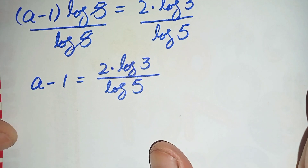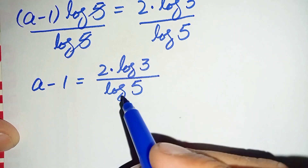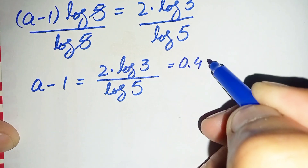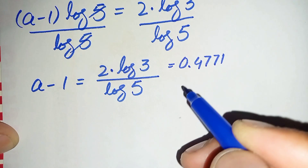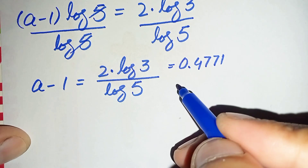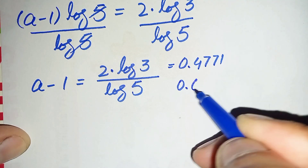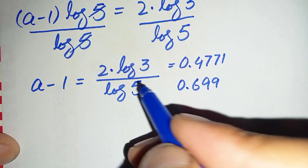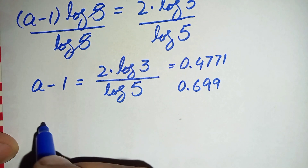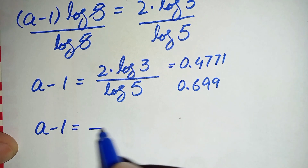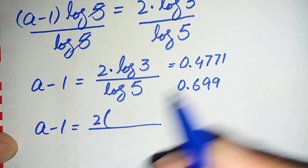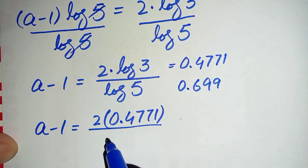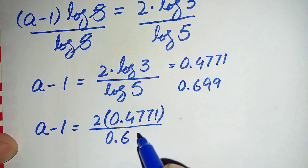In the next step we substitute the values of log 3 and log 5. The value of log 3 is 0.4771 and the value of log 5 is 0.699, up to three decimal places. Substituting these values, a minus 1 is equal to 2 times 0.4771 divided by 0.699.